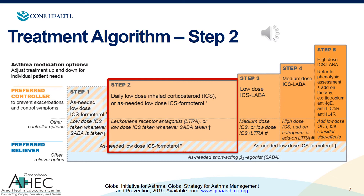Step 2 covers patients who have symptoms more than two days a month but less than every single day. These patients can either get a daily low-dose inhaled corticosteroid — something like daily fluticasone or Flovent — or they can do the as-needed low-dose Symbicort, since step one and step two patients were both studied in the SIGMA trials. For those ICS-formoterol patients, continuing to use the ICS-formoterol as the preferred reliever is an option; or if the patient is on just the inhaled corticosteroid alone, you would prescribe separate as-needed albuterol as their reliever. Other controller options include a leukotriene receptor antagonist or montelukast, or taking the inhaled corticosteroid and albuterol inhaler one after the other to treat immediate symptoms.